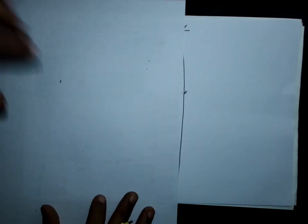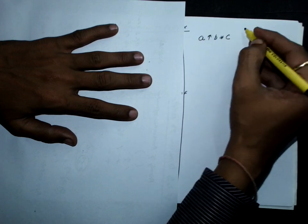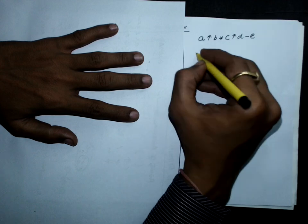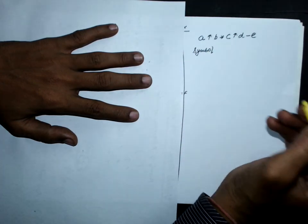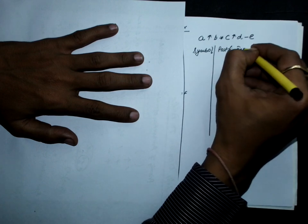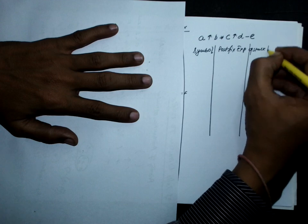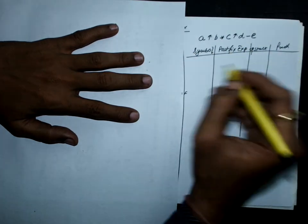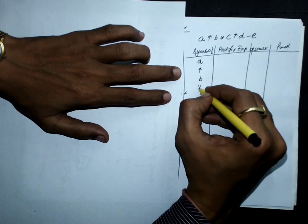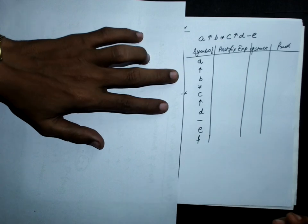Let us take one more example. The expression is A raised to the power B, multiplied with C raised to the power D, minus E. We are going to convert this expression to postfix. For this, let us take a table with columns for symbol, postfix expression, stack (which is an operator stack), and a precedence function. The symbols are A^B * C^D - E, and the last symbol is dollar.